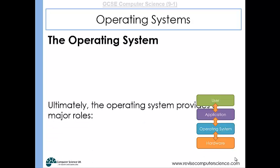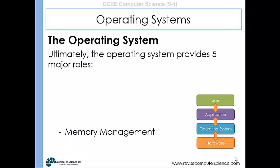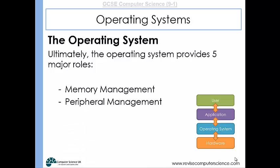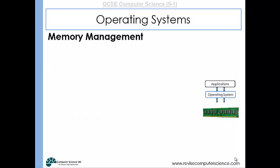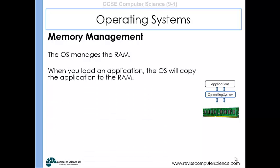The operating system has five major roles: memory management, peripheral management, multitasking, security, and providing an interface for the user. When it comes to memory management, the operating system manages the RAM. When you load up a program and double-click on an icon on the desktop, a copy of that application is put onto the RAM so that the CPU can start to work with it. It's the operating system that copies the application onto the RAM.